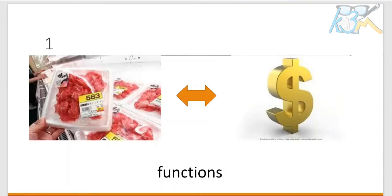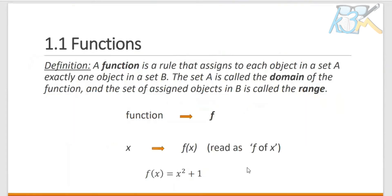And now we define functions. A function is a rule that assigns to each object in a set A exactly one object in a set B. The set A is called the domain of the function, and the set of assigned objects in B is called the range.